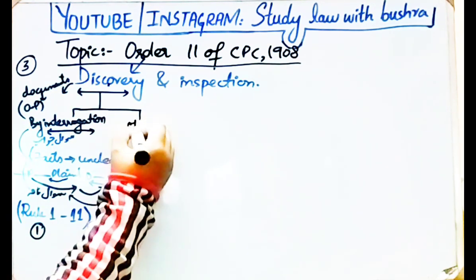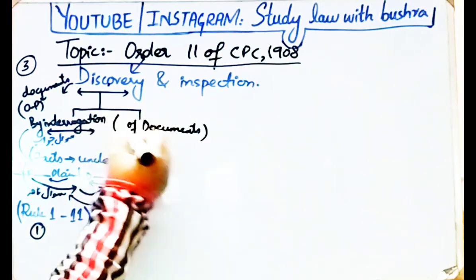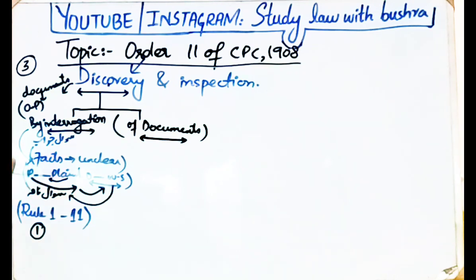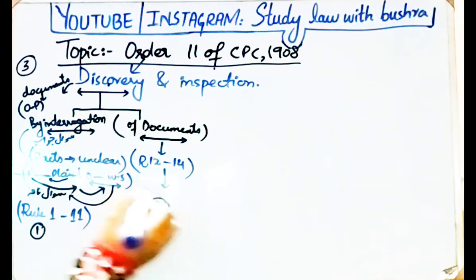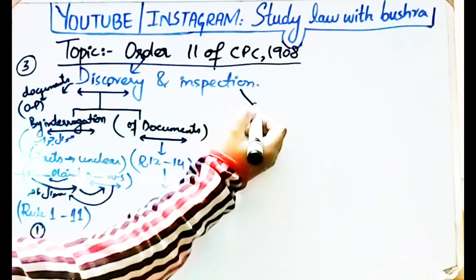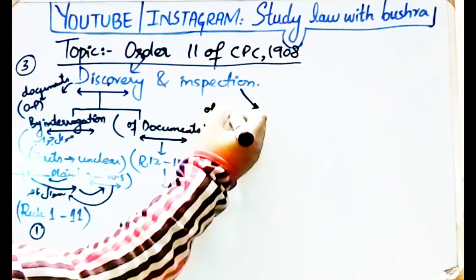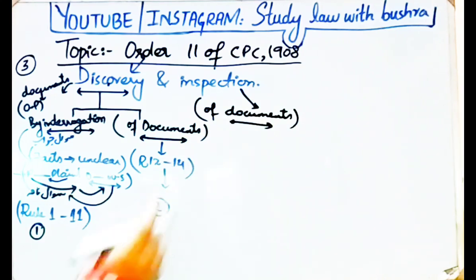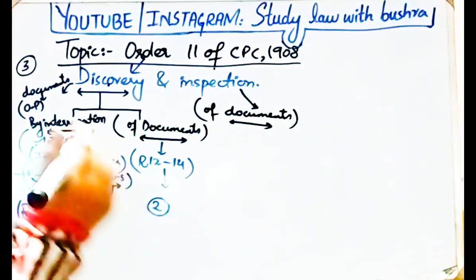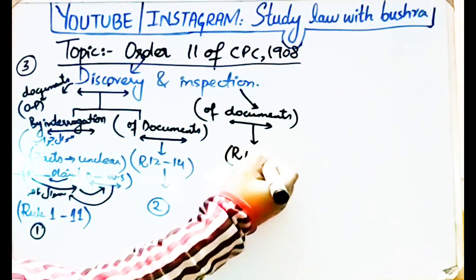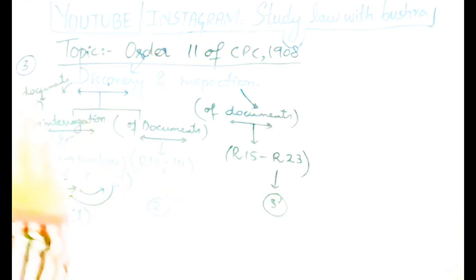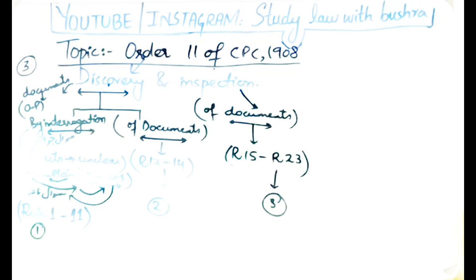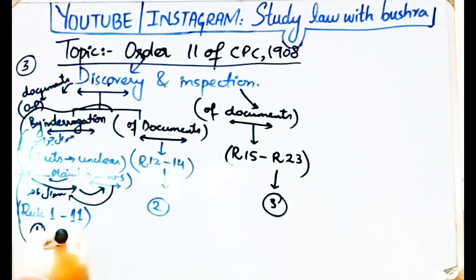Interrogatories se related rules, Rule 1 se Rule 11 tak hain jo hum aaj ki is video mein discuss karenge. Discovery of documents se related rules, Rule 12 se Rule 14 tak hain jo hum next video mein discuss karenge. Third part Order 11 ka hai inspection of the documents — agar koi party kisi document ko inspect karna chahti hai to woh kar sakti hai. Uska procedure Rule 15 se Rule 23 tak bataaya gaya hai. Aaj ki video ka topic hai Part 1 — discovery by interrogatories, Rule 1 se Rule 11 tak.